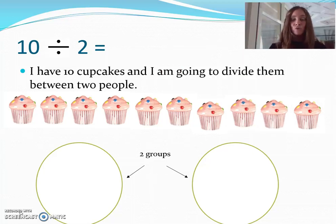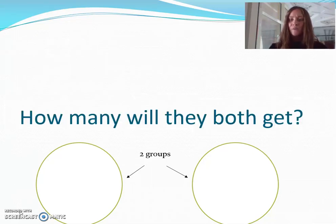So, at the bottom, I've drawn my sorting circles. Next, I need to share them so that everybody gets the same amount. How many will they both get?